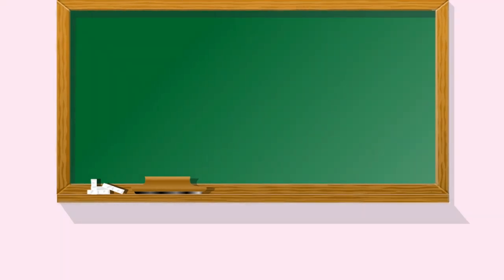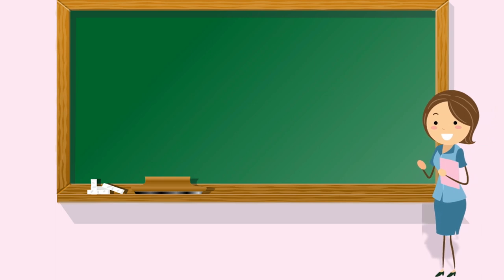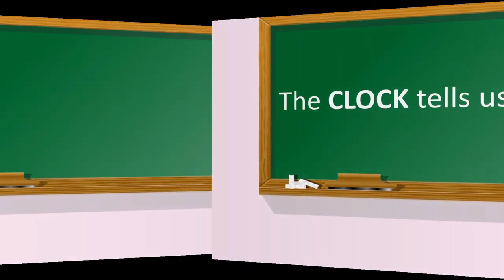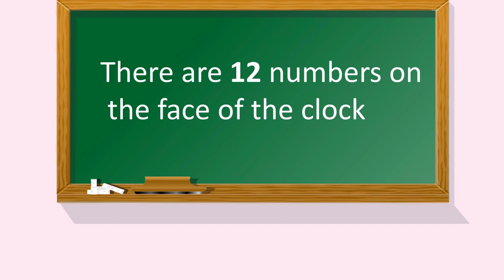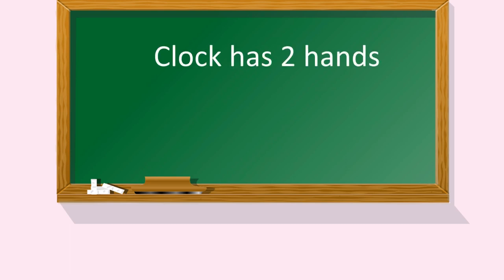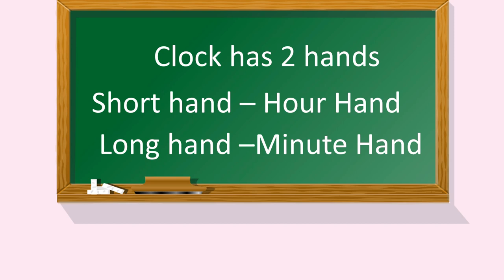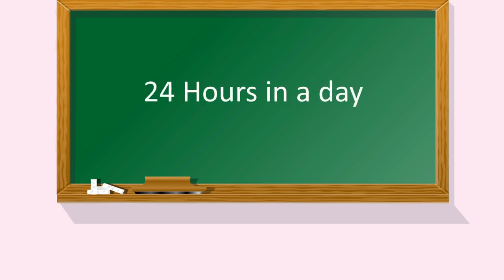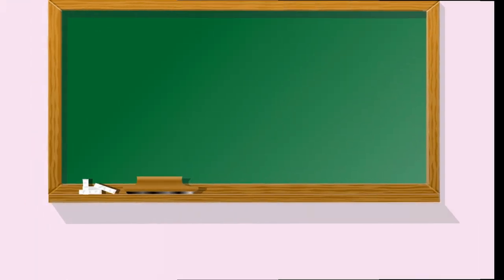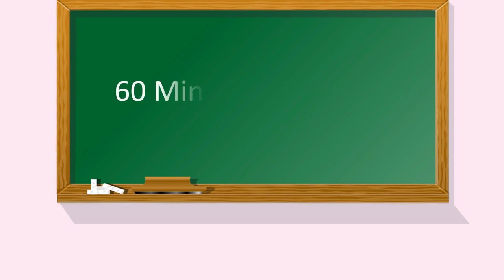Let us quickly go through the lesson once. There are 12 numbers on the face of the clock. A clock has two hands — the short hand is called the hour hand and the long hand is called the minute hand. There are 24 hours in a day and 60 minutes in an hour.